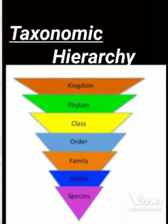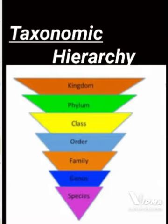Hi everyone, welcome to my channel Biocatalyst 2021. In the previous video we started with taxonomic hierarchy where we studied about species in detail. The taxonomic hierarchy starts with kingdom, which has the most diverse organisms, whereas species is a taxon where the most closely related organisms are found, with the least diversity. So let's take up some examples of species and then move to the next taxon.